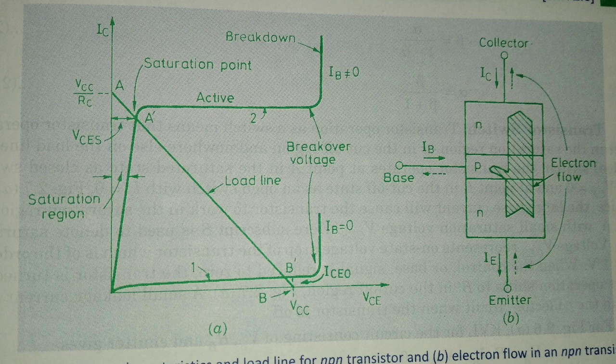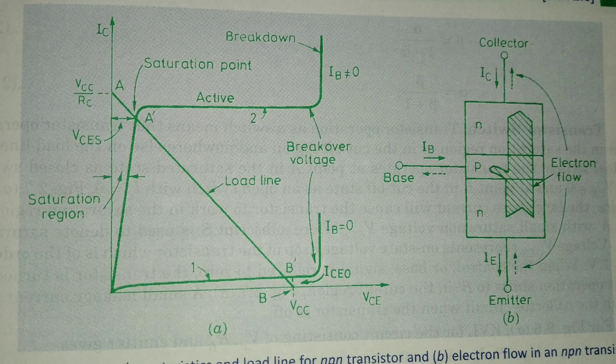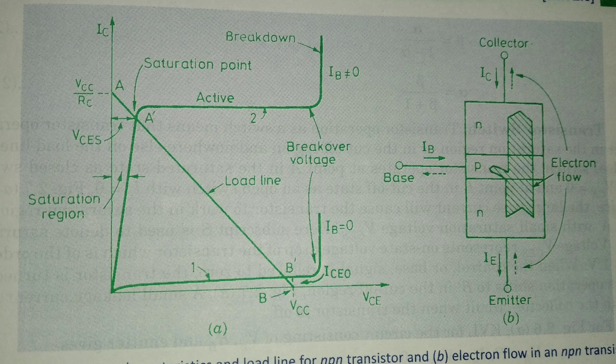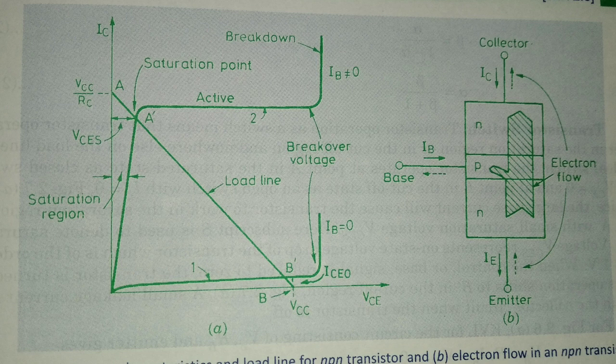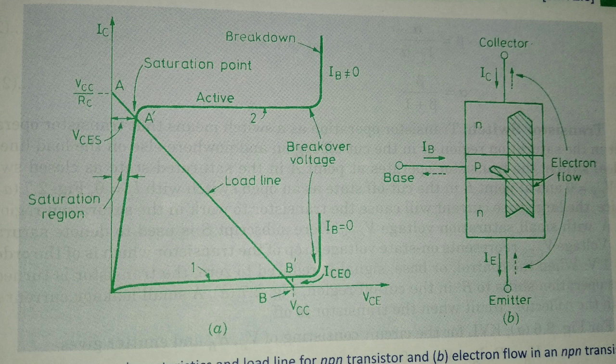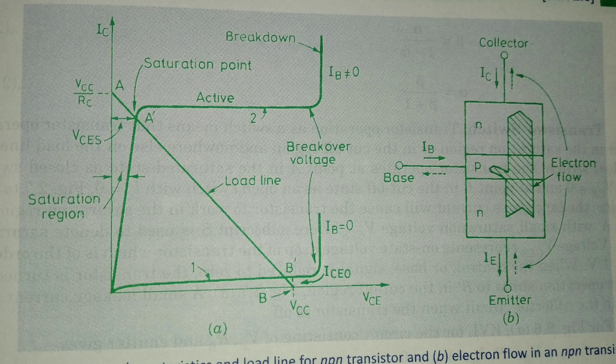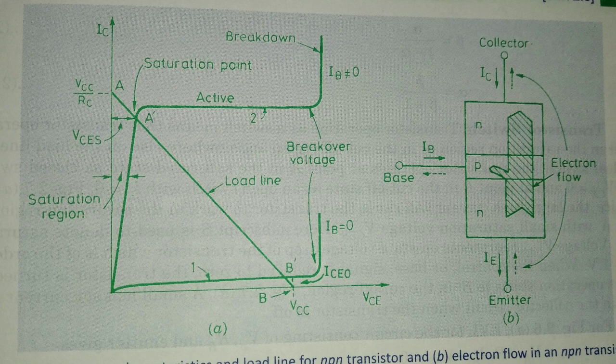And when base signal is reduced to 0, means whatever signal we are applying to the NPN transistor it will be reduced to 0, then transistor automatically turns off and operation shifts to B dash in the cutoff region. Here a very small leakage current represented by ICEO flows through the circuit.